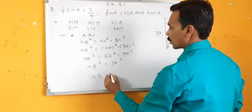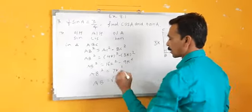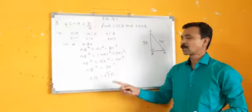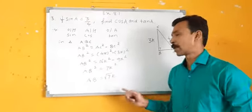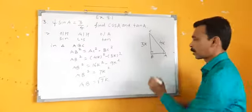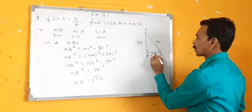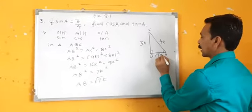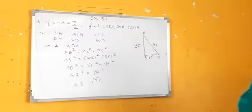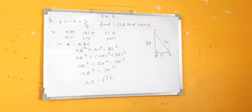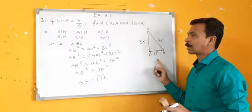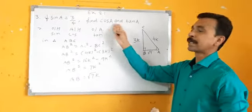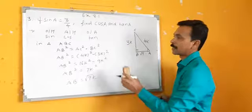So AB is equal to root 7K. Why root 7? Because 7 is not a perfect square. Now I have got the value of AB as root 7K. Once I have the third value, I can find the trigonometric ratios. Let's find cos A and tan A.